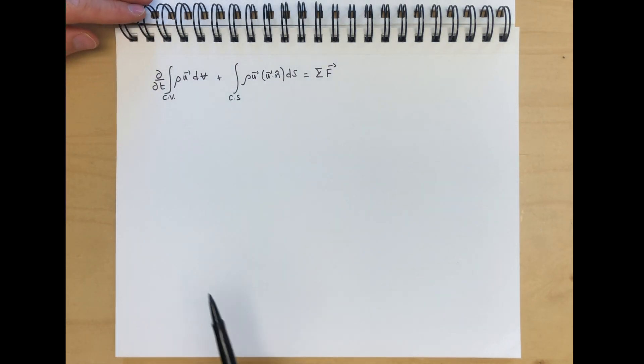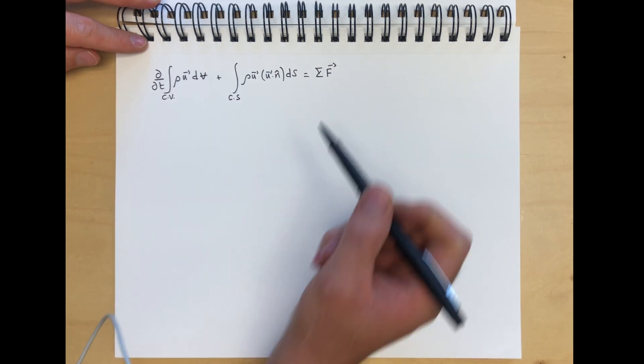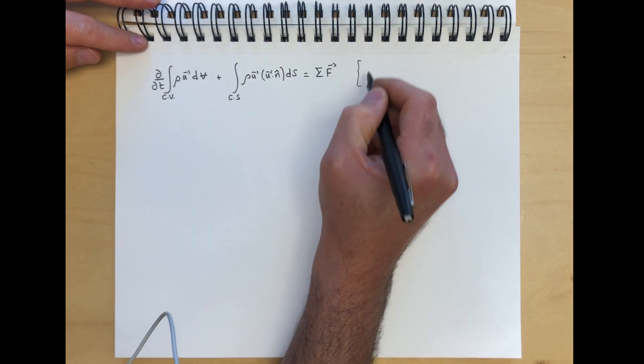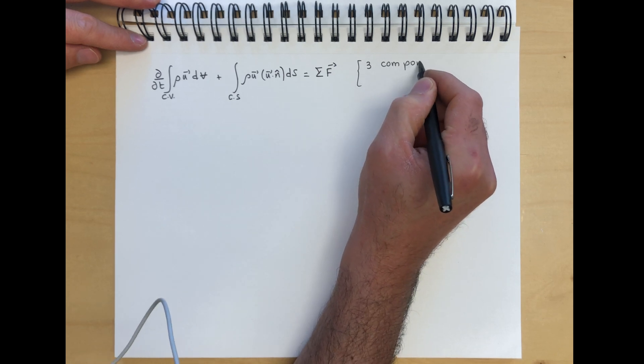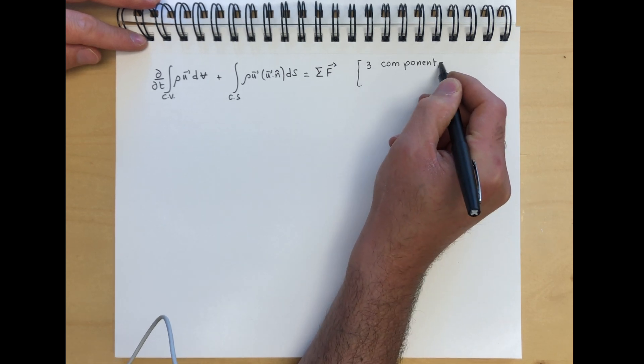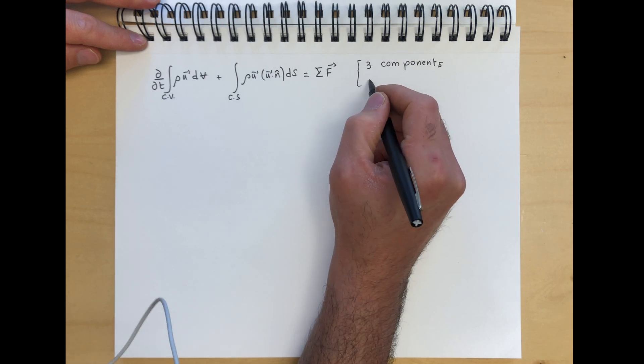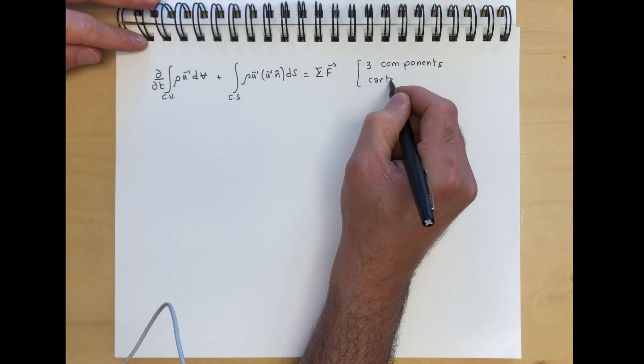Just to remind you that this equation is a vector equation, so it has three components in Cartesian coordinates: x, y, and z.